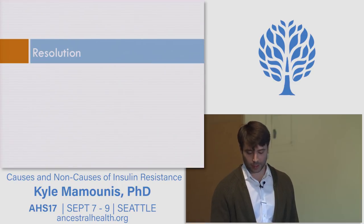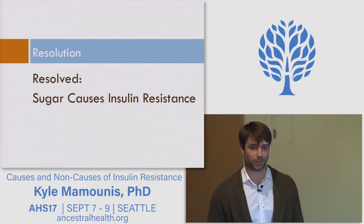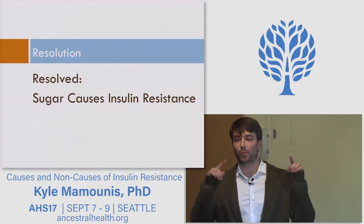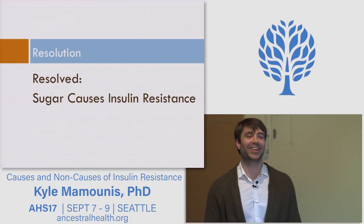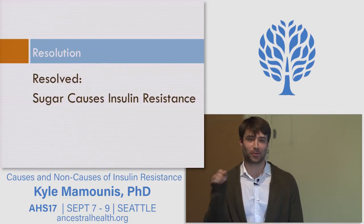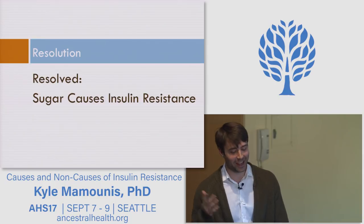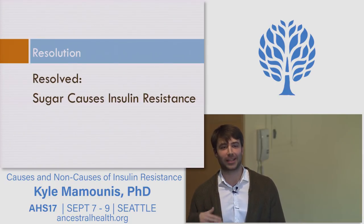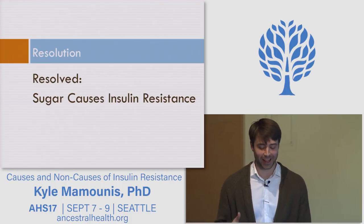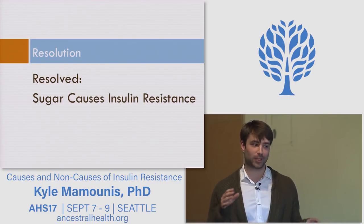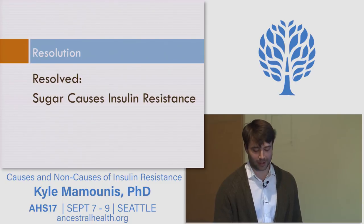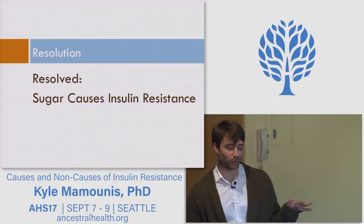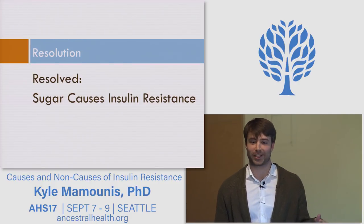That is the sugar-does-not-cause-insulin-resistance argument. Restating the resolution: resolved, sugar causes insulin resistance. If you were for that resolution and are now against it, raise your hand — okay, like one person. If you were against it and now for it — that should be nobody. Most people did not change their mind. However, one or two people changed from pro to against, which means I win the Oxford-style debate with myself — and I would have won either way.